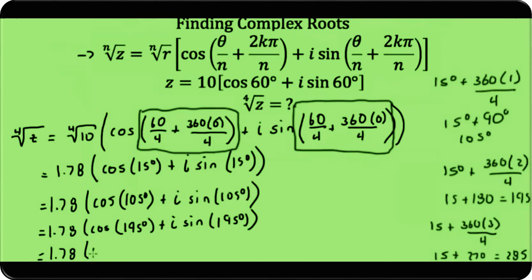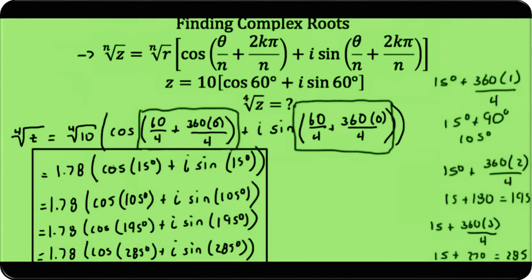1.78[cos 285° + i sin 285°]. So these four complex numbers in polar form are all solutions to the fourth root of z. And now that we've figured out how to find complex roots, that completes the tutorial on complex numbers and De Moivre's theorem.